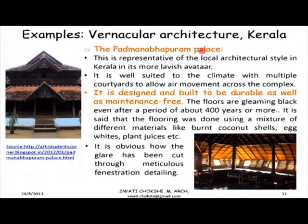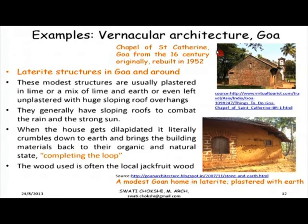The highlight of Kerala architecture is its sloping roofs, using the courtyard as a climatic device to bring in cross ventilation to combat the humid climate. Local louvered fenestration cuts out glare while still allowing air movement. Another highlight is the durability and maintenance-free aspect — the flooring in the Padmanabhapuram Palace example is almost 400 years old. In Goa and surrounding areas, modest laterite structures use mud and lime plasters that allow materials to disintegrate into their natural organic state, completing the loop with no disposal issues.